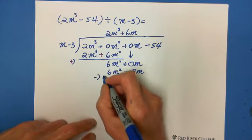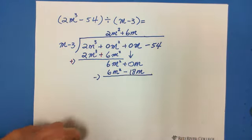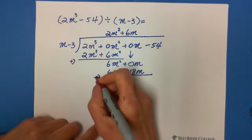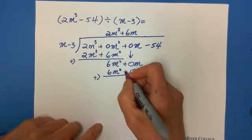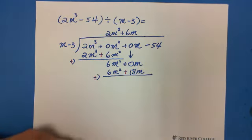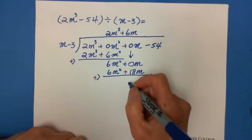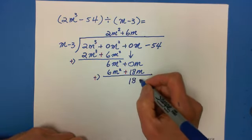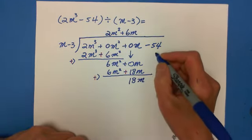Subtract and add its opposite. So here we have 0 plus 18 equals 18. It's positive 18m. Carry down the constant, negative 54.